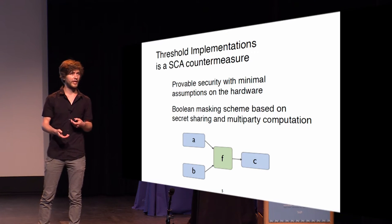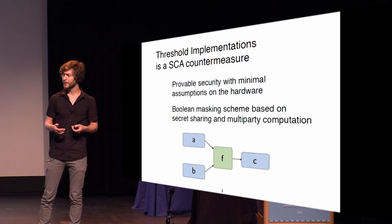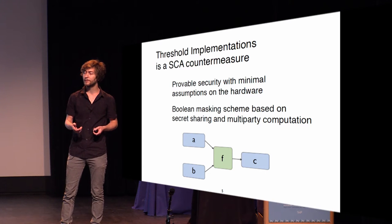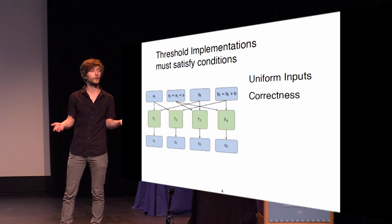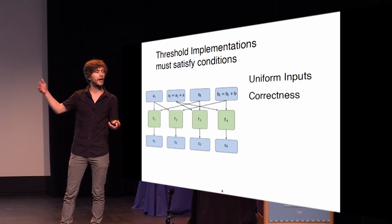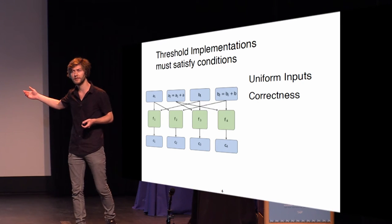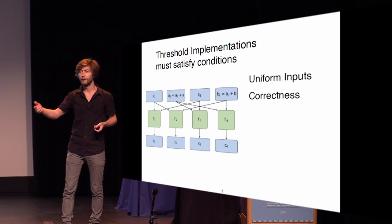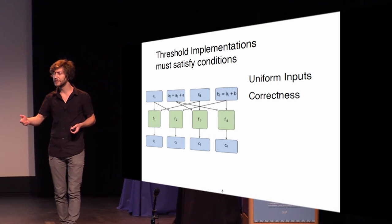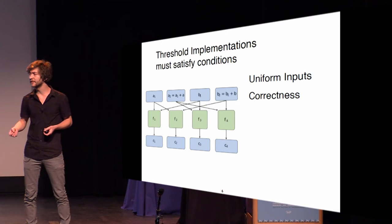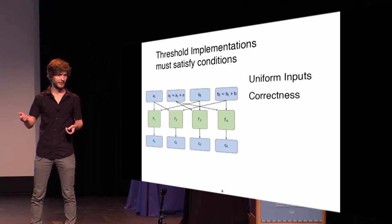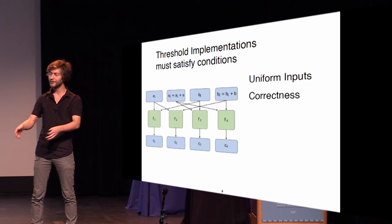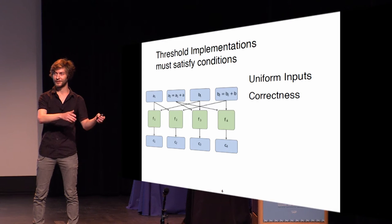If we want to mask a function F with inputs A, B and output C, the first thing we do is split these. Since we use D plus one shares, I exemplify this on a first-order implementation — we get A1, A2, B1, B2. The basic properties of masking that need to be satisfied are uniform inputs and correctness: whatever you do in the masked implementation should reflect what is done in the unmasked implementation.